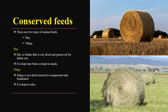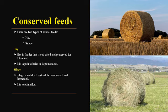After fodder crops, we also have conserved feeds. There are two types: hay and silage. The difference between the two is that hay is cut, dried, and preserved for future use, while silage is not dried — instead it is compressed and fermented. Silage is stored in silos, while hay is kept in bales or in stacks. If you check the two photos, you are able to see which one is hay and which one is silage.